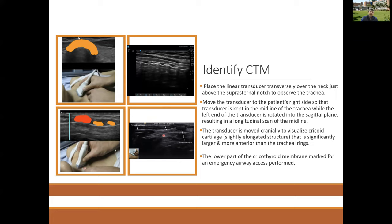If planning awake intubation, pre-identification of the cricothyroid membrane also helps to give a transtracheal or recurrent laryngeal nerve block to prepare the airway, and provides practice for emergency puncture if needed. Performing a cricothyroid membrane puncture for local anesthesia during awake intubation preparation is sincerely recommended to ensure you can do it in an emergency.